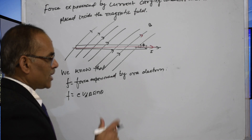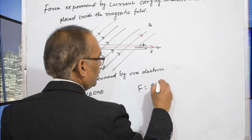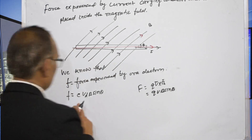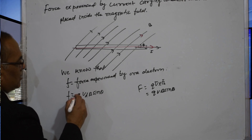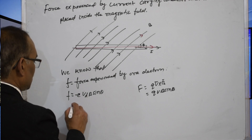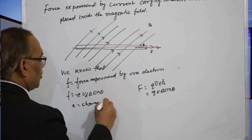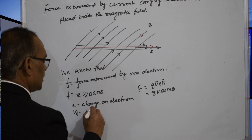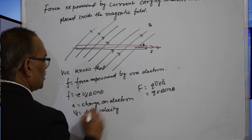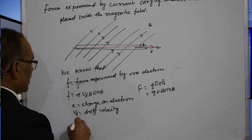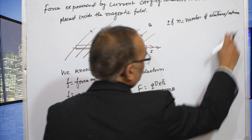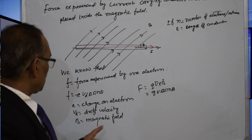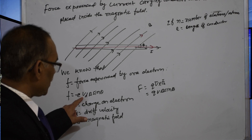We know the force is equal to Q V B sin theta, or we can write it as f equals Q V cross B. Here E is the charge on the electrons, V_d is the drift velocity, and B is the magnetic field. If N is the number of electrons per unit volume, one electron experiences a force equal to minus E V_d B sin theta.